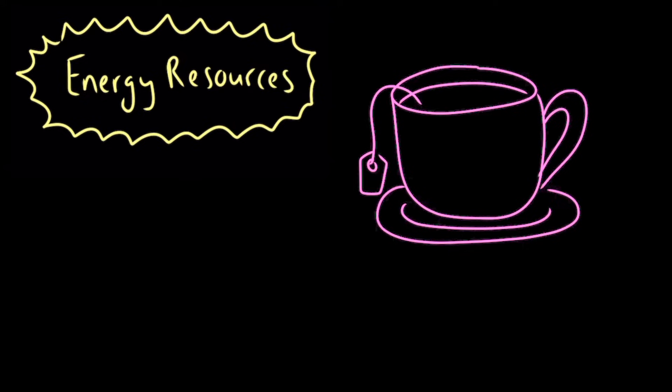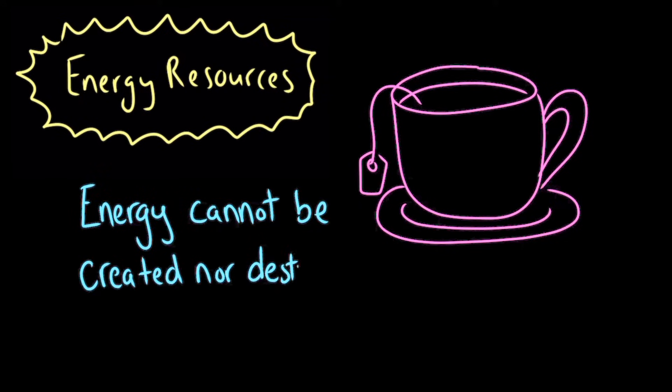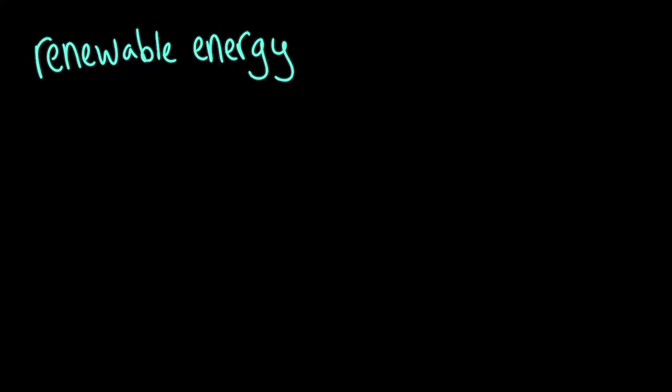We use energy constantly in our daily lives, since the first law of thermodynamics states that energy cannot be created nor destroyed. Where does it all come from? And will we have enough? When we talk about energy resources, we could split it up into two groups: renewable energy and non-renewable energy.